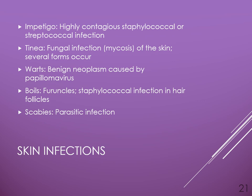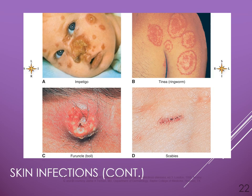Regarding skin infections: impetigo is a highly contagious staphylococcal or streptococcal infection. Tinea is a fungal infection or mycosis of the skin. A wart is a benign neoplasm caused by the papilloma virus, with several different strains. Boils are referred to as furuncles and are caused by staphylococcus, which gets into the hair follicles and infects them. Scabies is a parasitic infection.